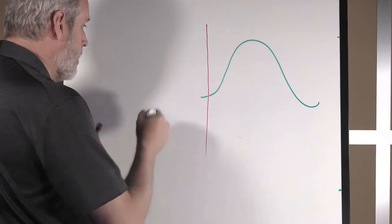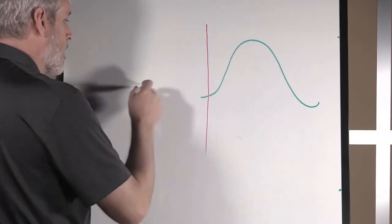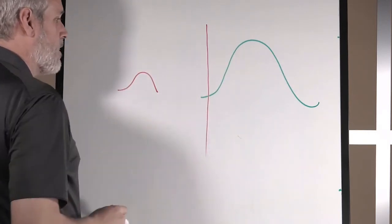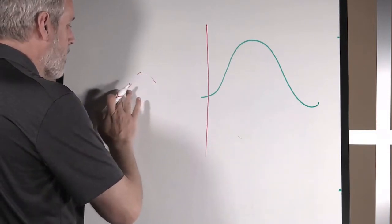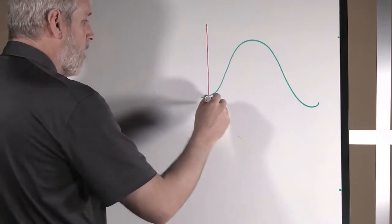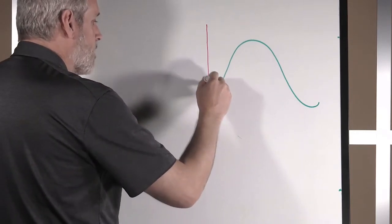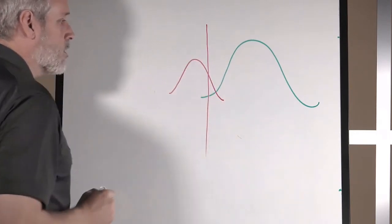Ideally then what you end up with is you've got your good devices here, your bad devices have a distribution that looks like this, and you're all set. But what happens a lot of time is you have some bad devices that still have decent transmit power and it looks like this.